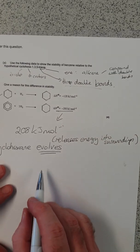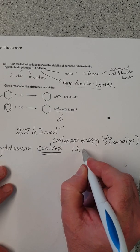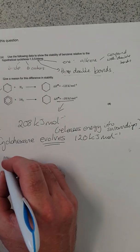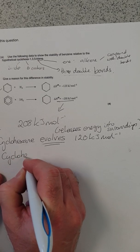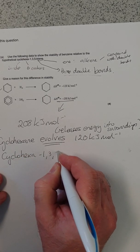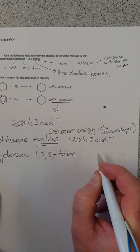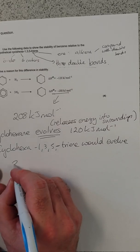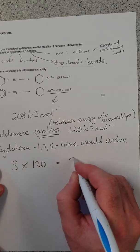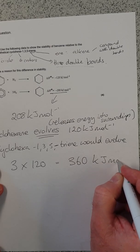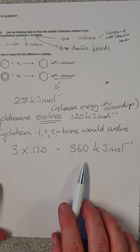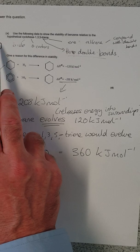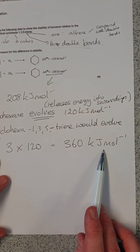In other words, it's exothermic. It puts out heat. It evolves 120 kilojoules per mole. Therefore, cyclohexatriene would release or would evolve 3 times 120 to give me 360 kilojoules per mole. So that's what we would expect to be released in this reaction, how much energy would expect to be released if benzene looked like this. That's how much energy we'd expect.